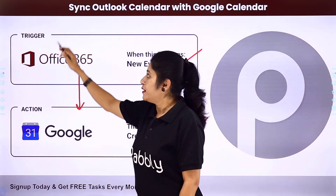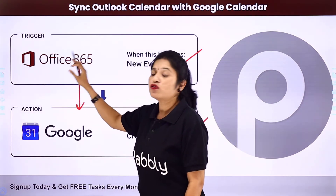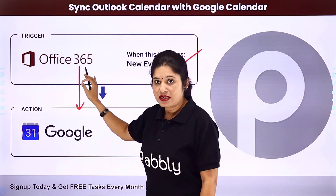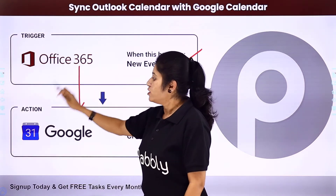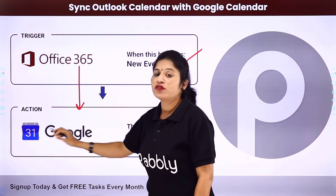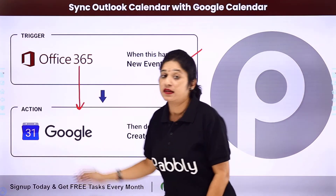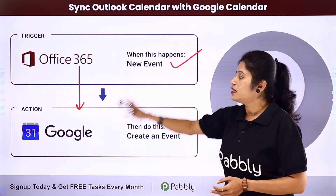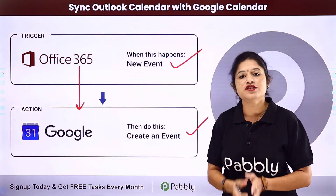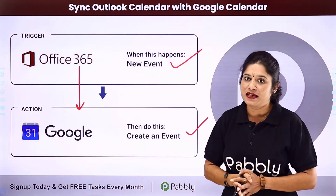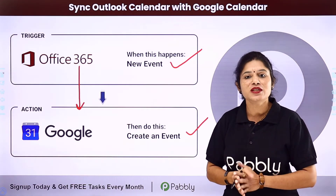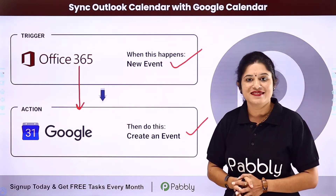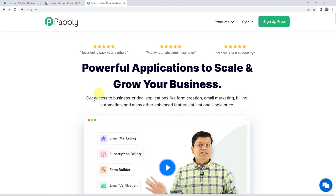Here, your trigger application would be Microsoft Office 365 and your action application would be Google Calendar. So how can you integrate both these software applications using Pabbly Connect? To integrate Outlook Calendar with Google Calendar, first we need to log into pabbly.com.